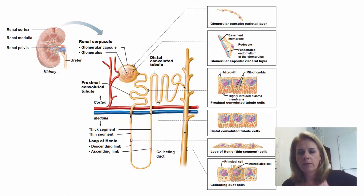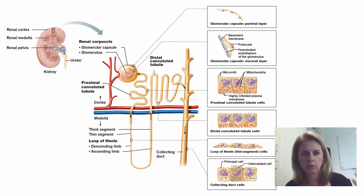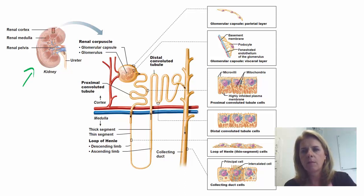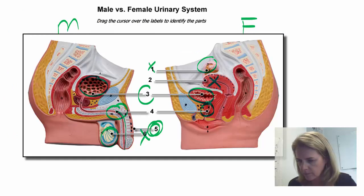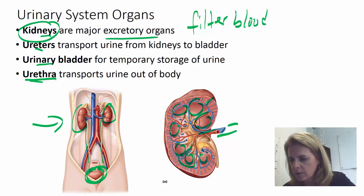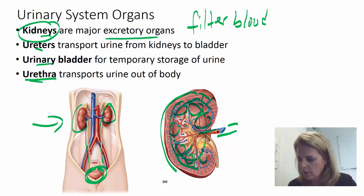Now let's talk about the gross anatomy of the kidney — we'll do a kidney lab later to really dig into the parts in detail. Any time you have an organ, the outside is called the cortex. So the outermost area of the kidney, where those little capillaries are all the way around, is the renal cortex. All the stuff in the middle is called the renal medulla.